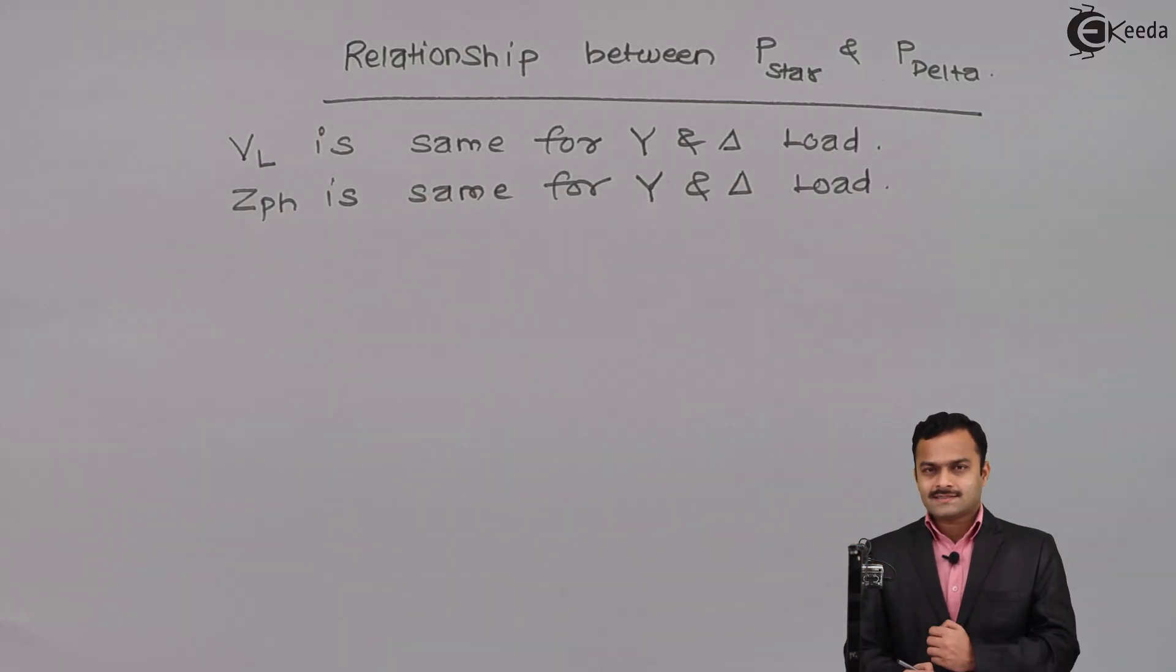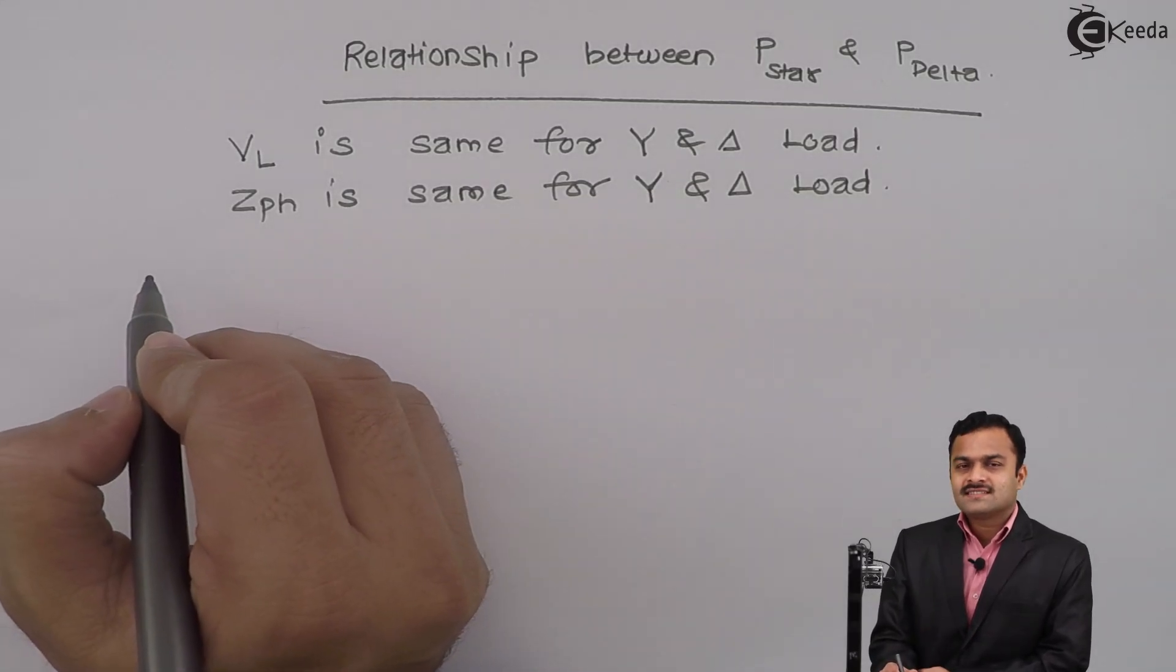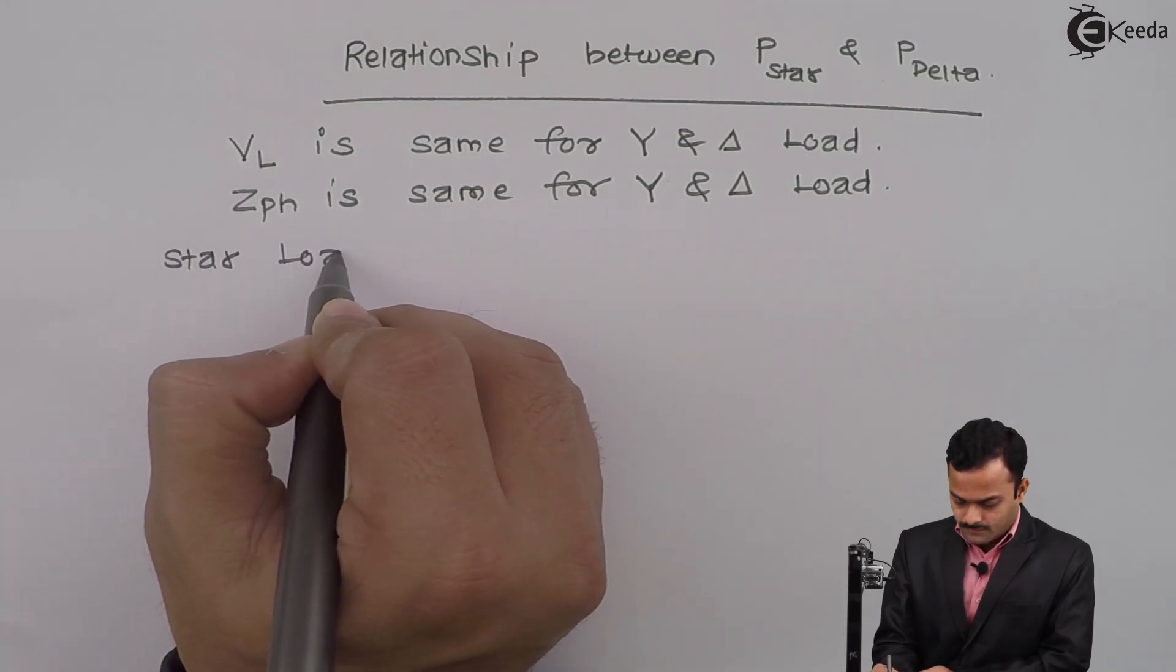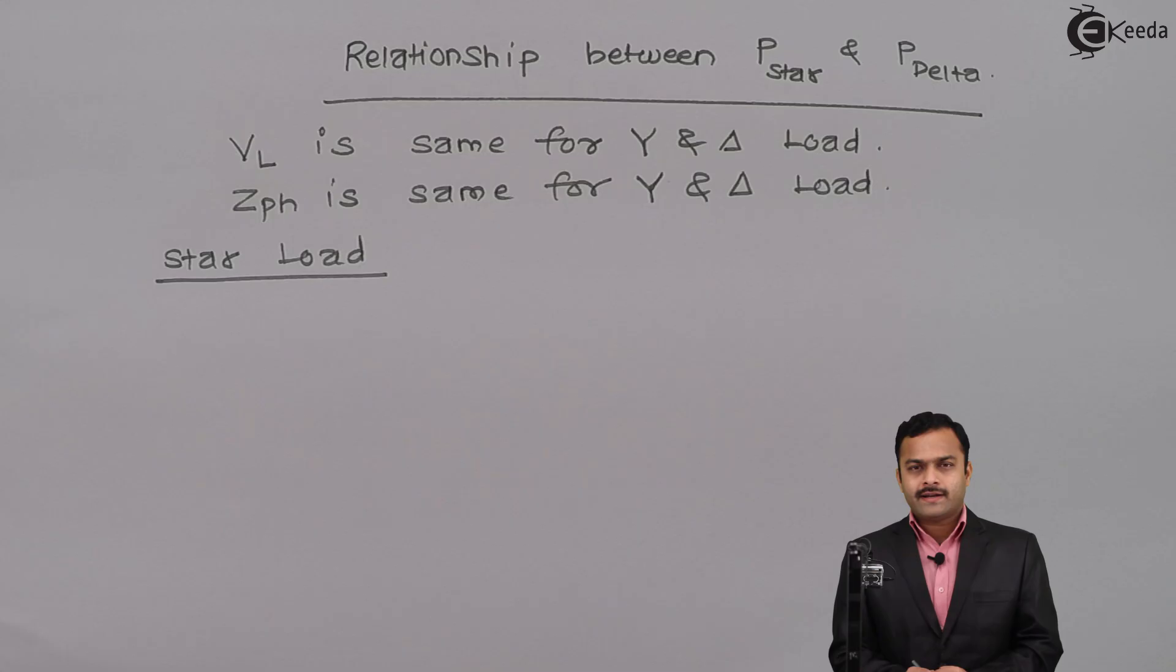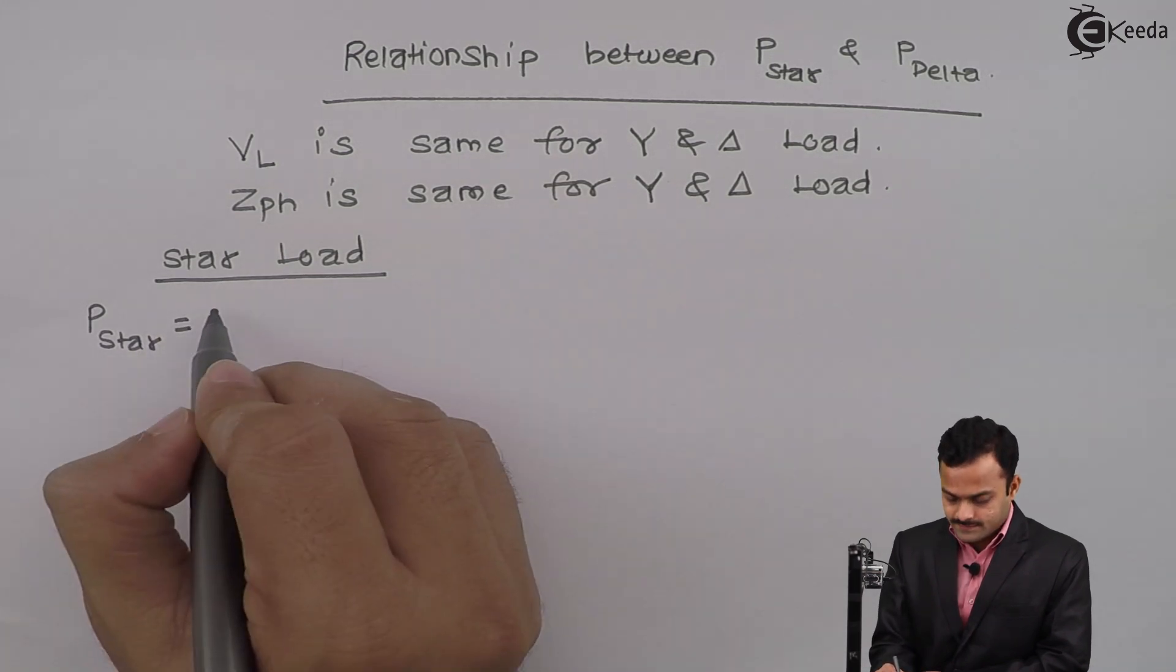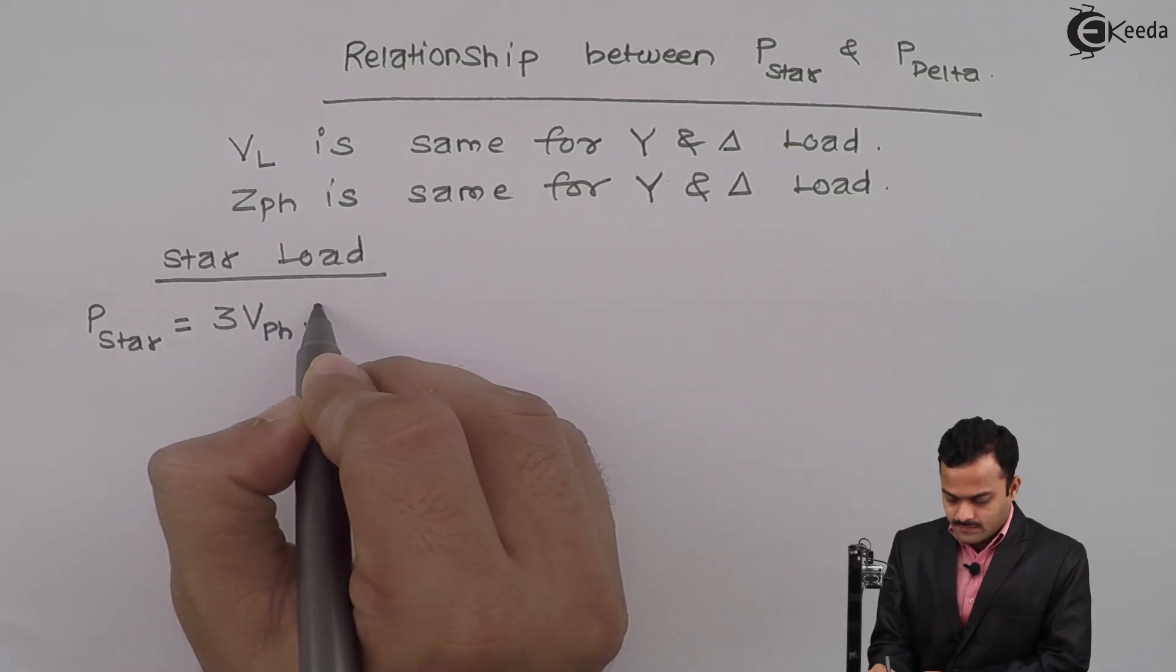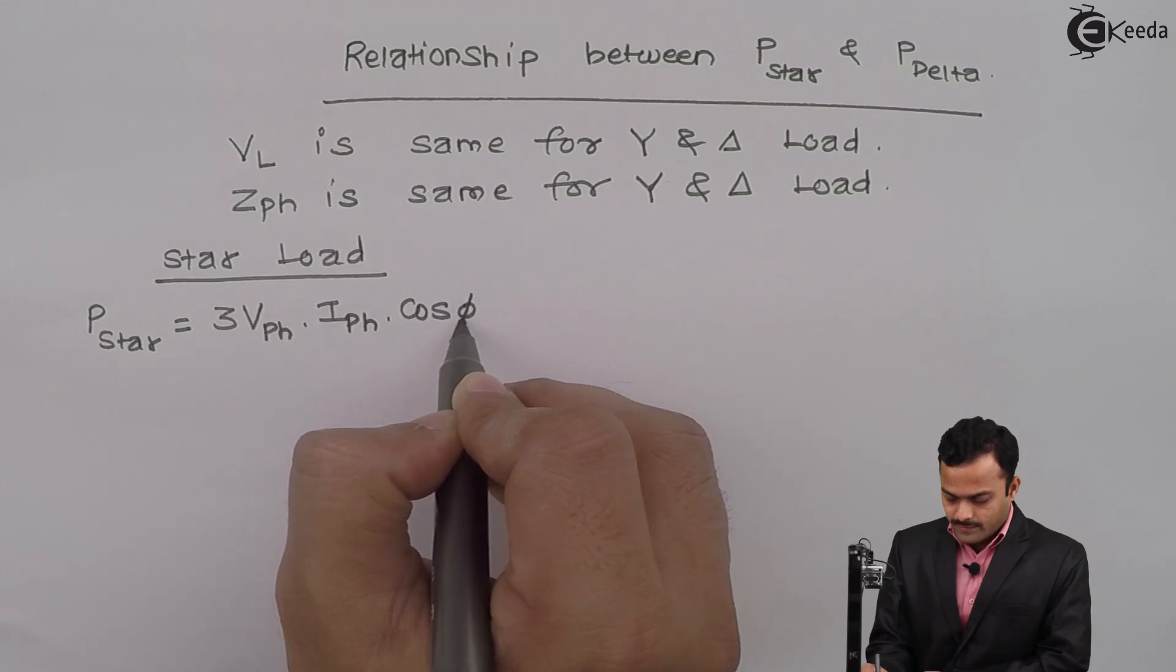So let's start with the relationship. First I will consider a star connected load. In a star connected load, let's start with a power expression. So P star is nothing but 3 VPH multiplied by IPH multiplied by cos phi PH.